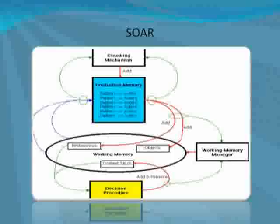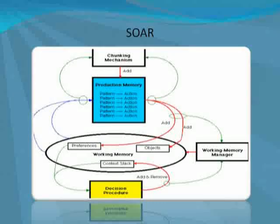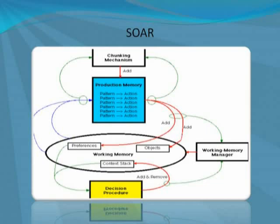As shown in the diagram, working memory contains the data representing current progress on all goals. Data is organized into objects consisting of a symbolic identifier and augmentation. Conditions are matched against working memory and can contain variables. The actions create preferences for changes to working memory, and all matched productions are fired in parallel.